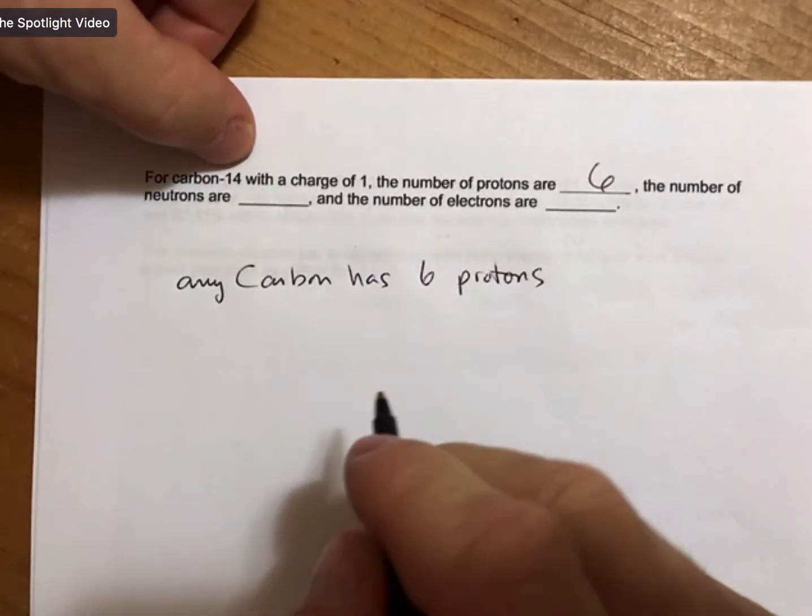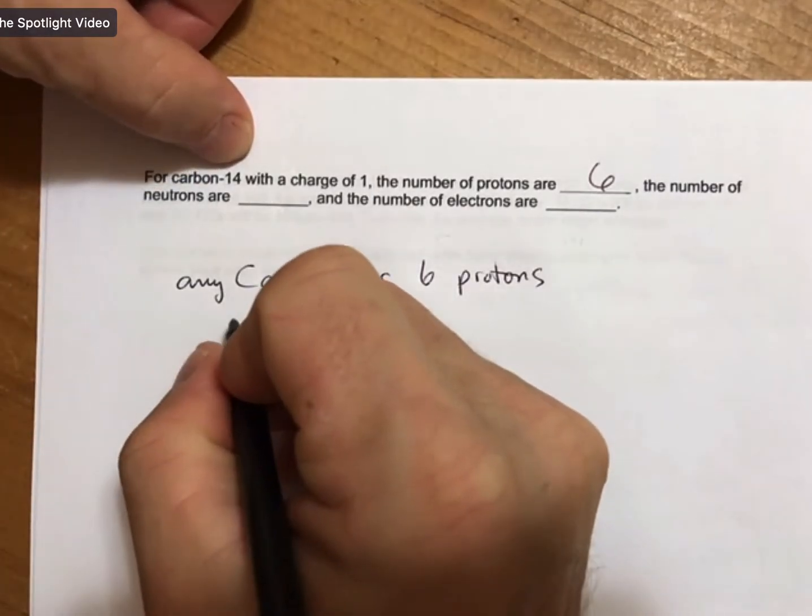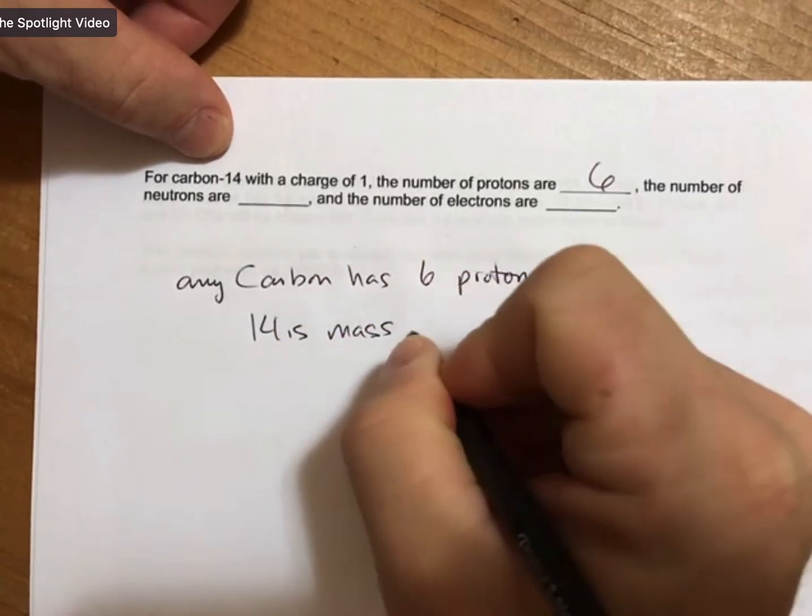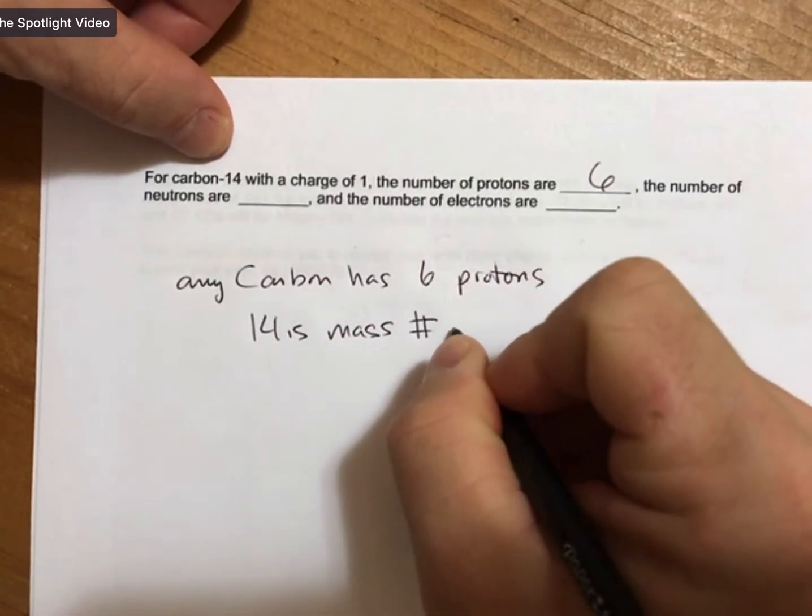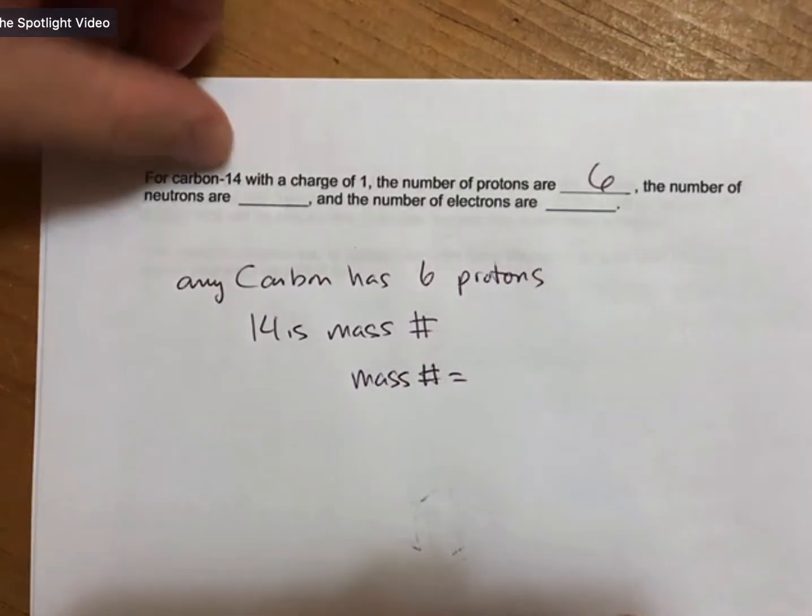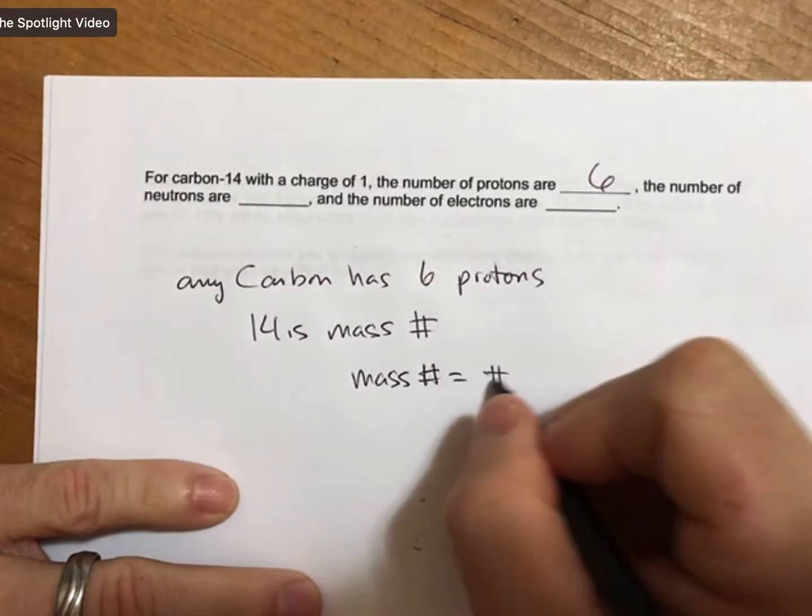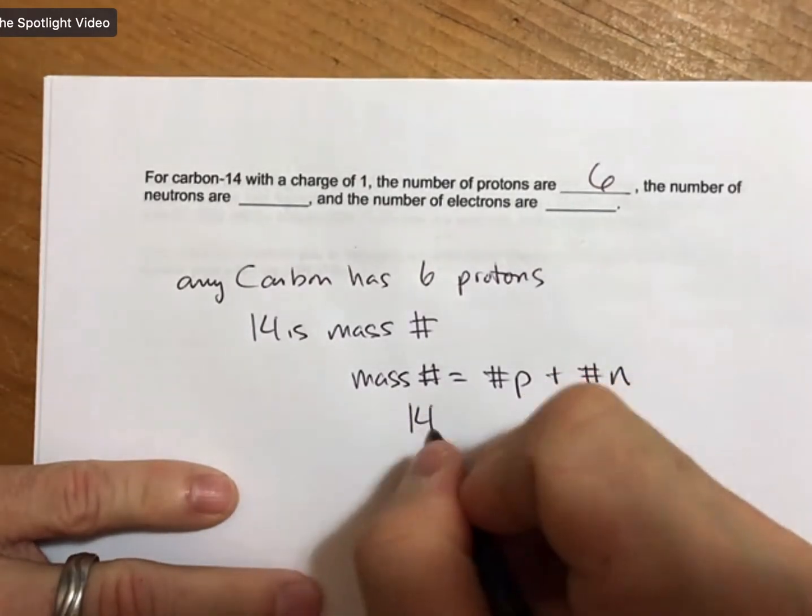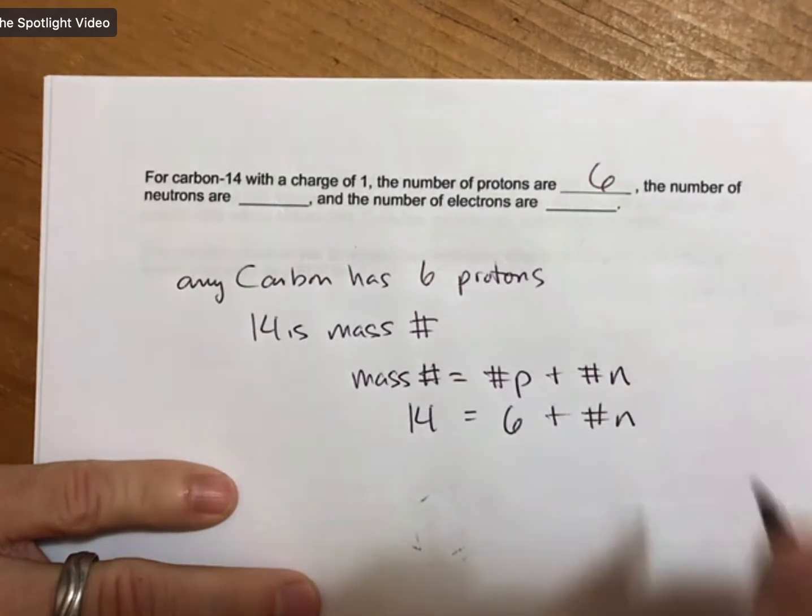The number of neutrons—well, for neutrons it's 14 which is the mass number. So 14 is mass number, and mass number equals number of protons plus number of neutrons.